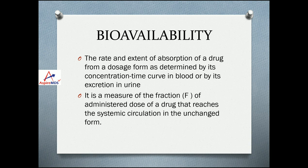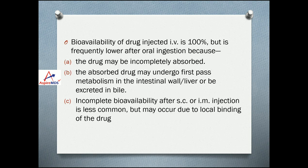Bioavailability is the rate and extent of absorption of a drug from a dosage form as determined by its concentration-time curve in blood or by its excretion in urine. It is a measure of the fraction of the administered dose that reaches the systemic circulation in unchanged form. Bioavailability of drug injected IV is theoretically 100%, but when given orally it is less — either because the drug may not be completely absorbed, or because absorbed drug undergoes first-pass metabolism in the intestinal wall or liver before being excreted in bile. Subcutaneous or intramuscular injections rarely show incomplete bioavailability but it can occur due to local binding.